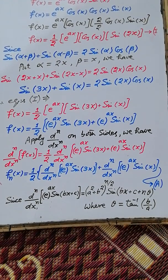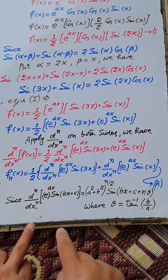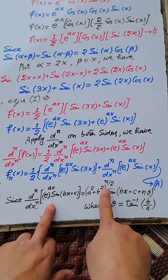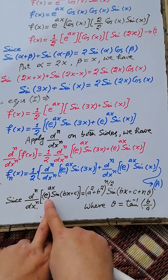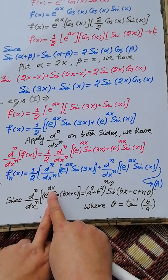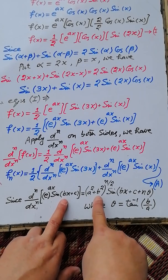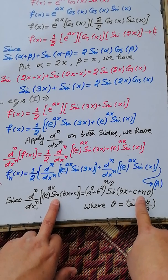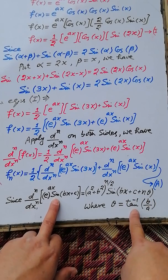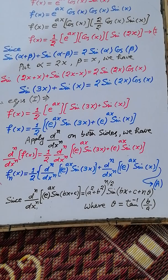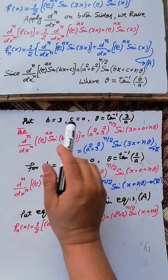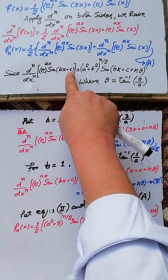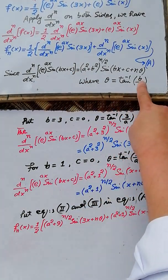According to our previous lecture, the nth derivative of e raise power ax times sin(bx + c) equals (a² + b²)^(n/2) multiplied by sin(bx + c + n·θ), where θ = tan⁻¹(b/a), a is the coefficient of x in the power of e, and b is the coefficient of x in the trigonometric function.